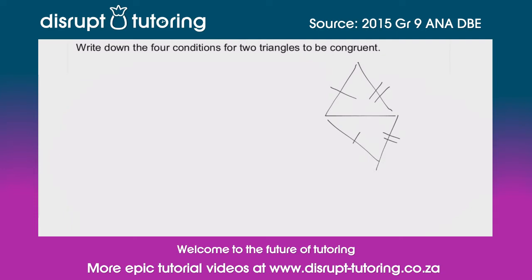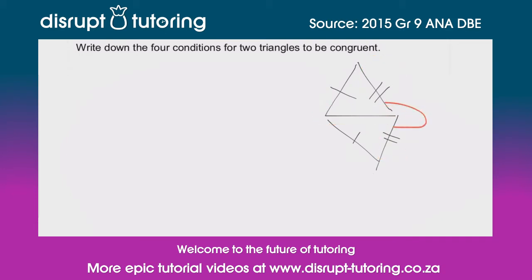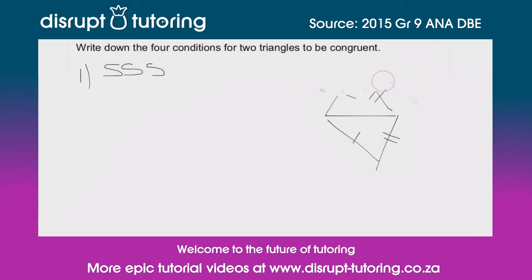So what do we notice here? We notice that this side is equal to this side, that side is equal to this side, and that side is common. So are these two triangles congruent? Yes, they are, because the three sides are equal. That brings us to our first condition: SSS, which means that all three sides are equal.